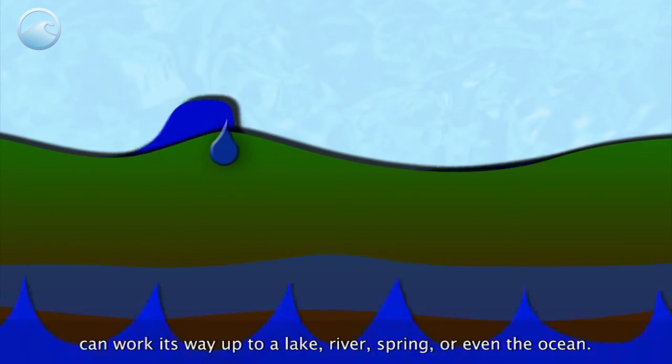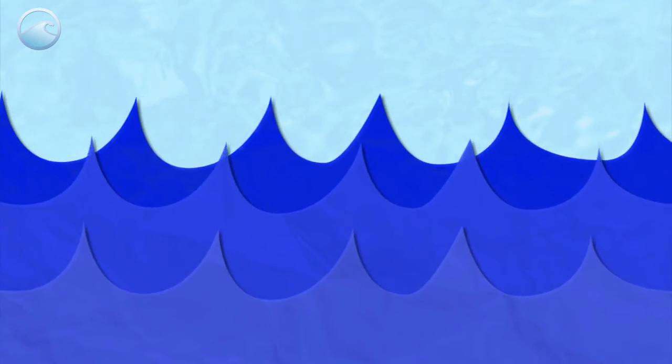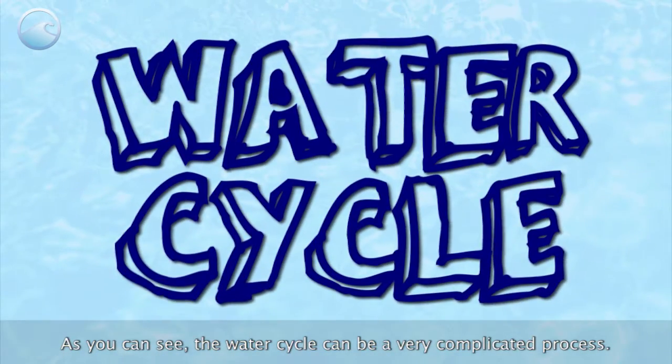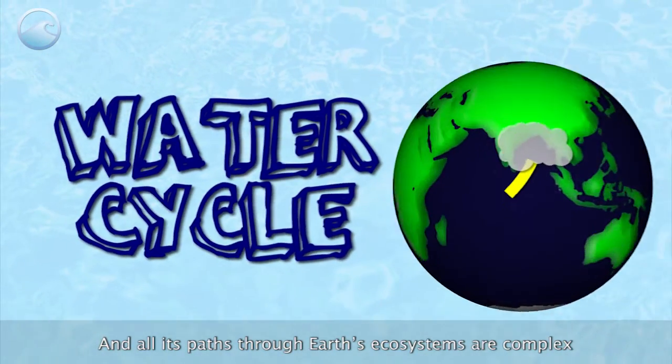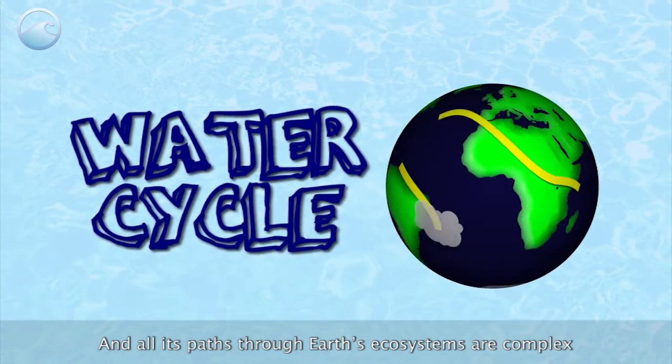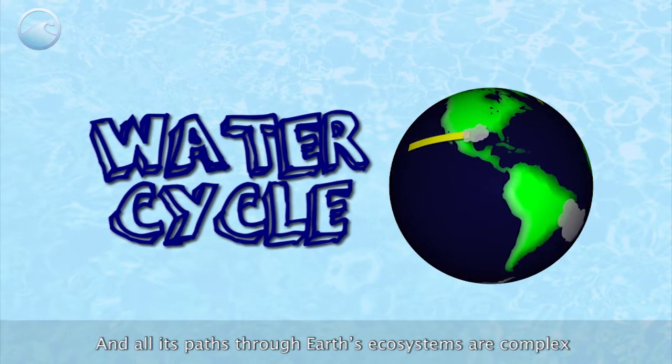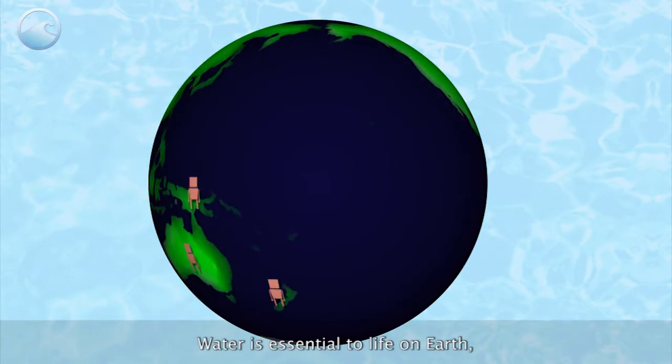As you can see, the water cycle can be a very complicated process, and all its paths through the Earth's ecosystems are complex and not completely understood. Water is essential to life on Earth.